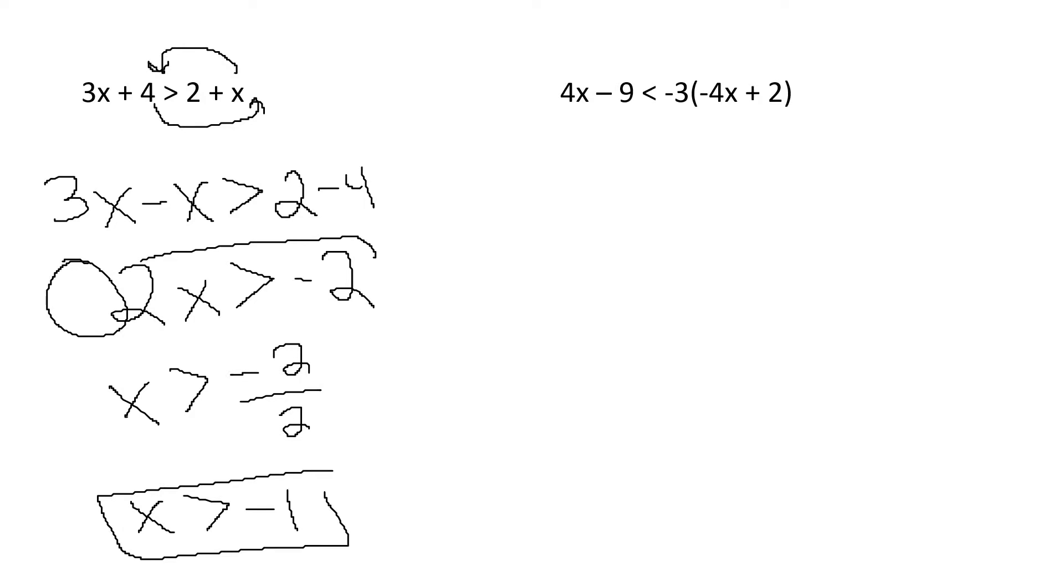Now, let's look at this one. First thing I'm going to need to do is distribute this out. I'm not touching my 4x, I'm not touching my 9, and I'm not touching my sign. Negative 3 times negative 4x is positive 12x. Negative 3 times 2 is negative 6. Now I'm going to move my x's over and I'm going to move my non-variable terms over. My understood plus 12 is going to become a minus 12x. Don't change your symbol yet. Only need to focus on multiplication and division for that symbol change.